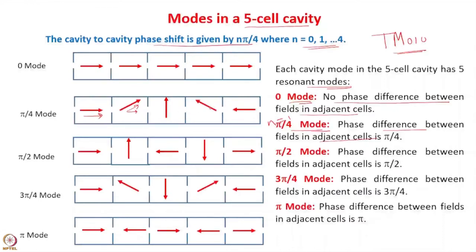When we go to the next cell, there is a phase shift of π/4 and now the field is in the opposite direction. Then in the last cell, another shift of π/4 and the field is again in the opposite direction. Similarly for n = 2, we have the π/2 mode with a phase shift of π/2 in adjacent cells — every alternate cell is unexcited with no field in the z direction. For the π mode, there is a phase shift of π in adjacent cells, so the fields in adjacent cells are in the opposite direction.